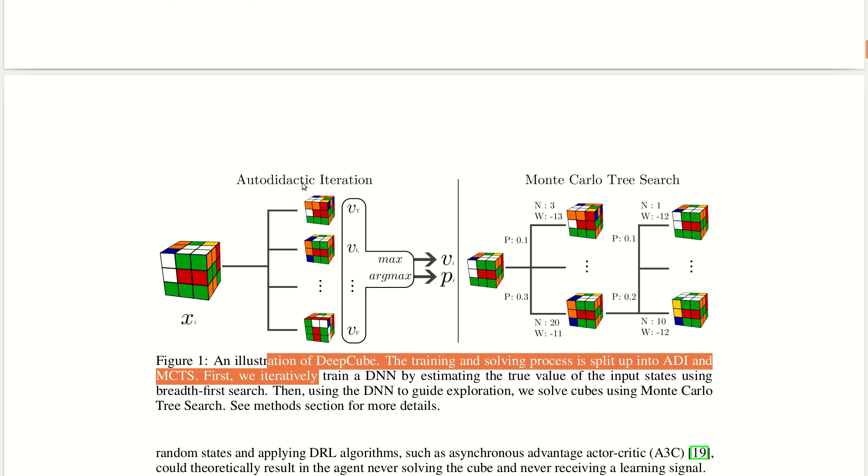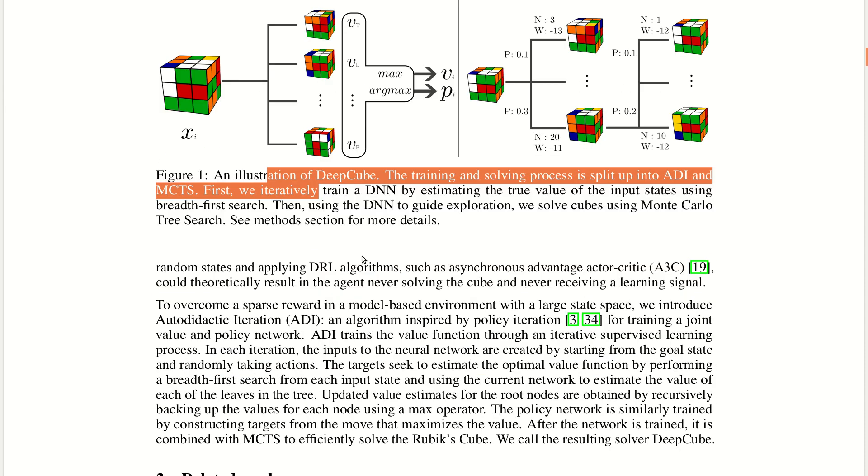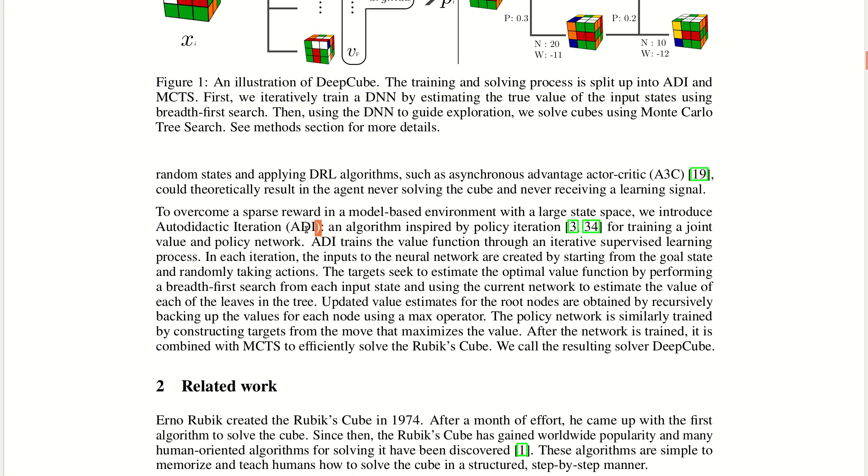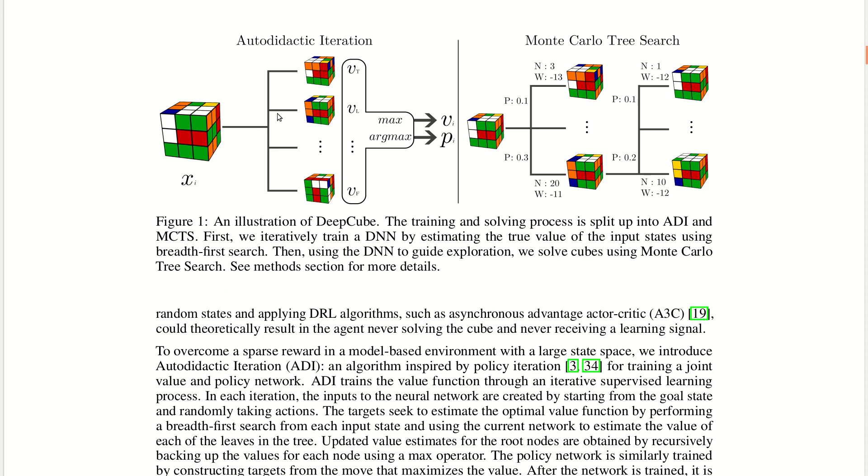They have tried to implement this ADI into Monte Carlo and create a policy network. The way they have created the policy network they haven't fully illustrated in the paper and their code is also not open source so I just can't check it.